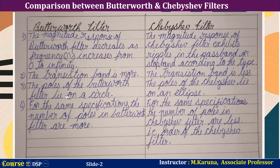The poles of the Butterworth filter lie on a circle. In the case of the Chebyshev filter, the poles lie on an ellipse.